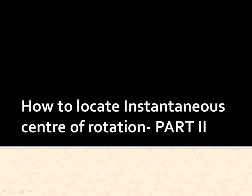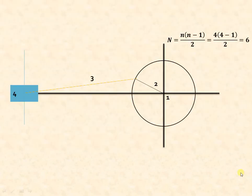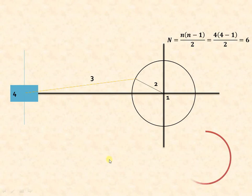Let us try to understand how to locate the instantaneous center of rotation for a single slider crank mechanism as shown. This is the fixed link, the crank is the second link, three is the connecting rod, and four is the piston. We will use the circle diagram method to locate the instantaneous centers of rotation.